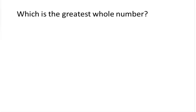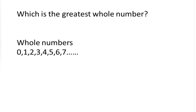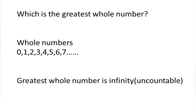Which is the greatest whole number? Whole numbers start with 0 — 0, 1, 2, 3, 4 — and they are countless. There is no end for whole numbers. We can say they are countless, or that the greatest whole number is infinity. It is uncountable; it just goes on. Whole numbers are infinite, so the greatest whole number is infinity, meaning uncountable.